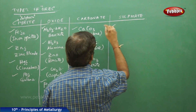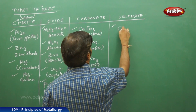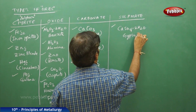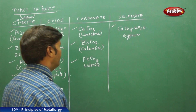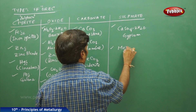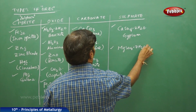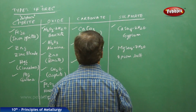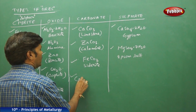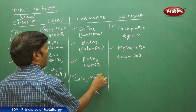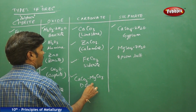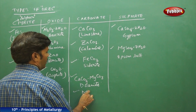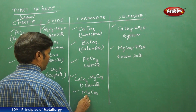For sulphate ores, examples include CaSO4·2H2O (gypsum) and MgSO4 (Epsom salt). For additional carbonates, CaCO3·MgCO3 is dolomite, and MgCO3 alone is magnesite.